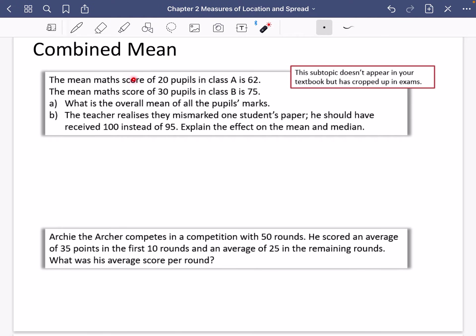So here it says that the mean math score of 20 pupils in class A is 62, but the mean math score of 30 pupils in class B is 75. What is the overall mean of all the pupils' marks? In other words, what is the combined mean of all the pupils' marks?